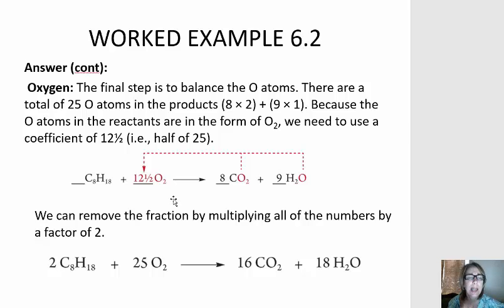But we tend to frown upon fractions when we look at coefficients. So when this happens, which it does happen often when we balance the combustion of hydrocarbons or the reaction of oxygen with hydrocarbons, we just multiply each coefficient by 2, and that clears out that fraction.